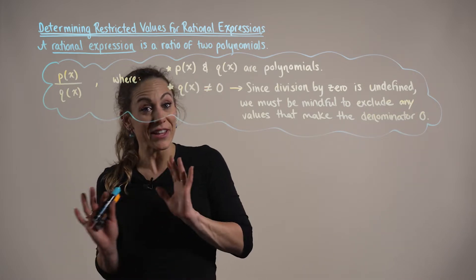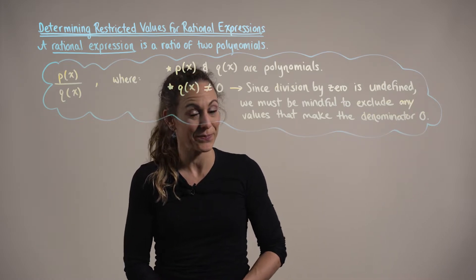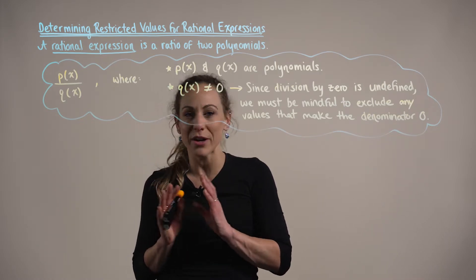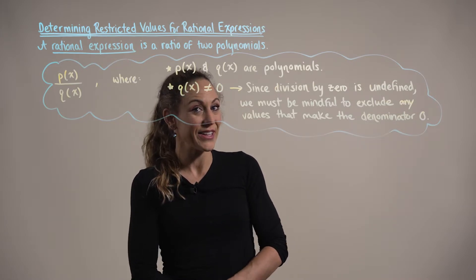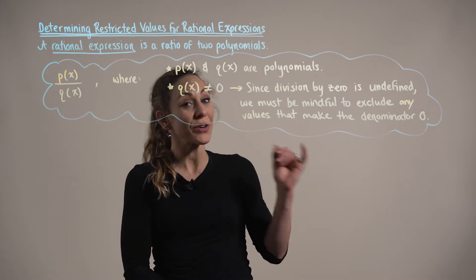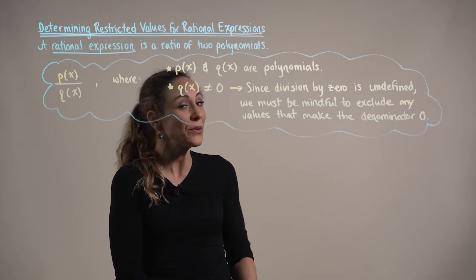We need to be careful here that the denominator q of x cannot be equal to 0. We know that this denominator cannot be equal to 0 because division by 0 is undefined. So it's up to us to make sure and make note of any values that must be excluded from this function.